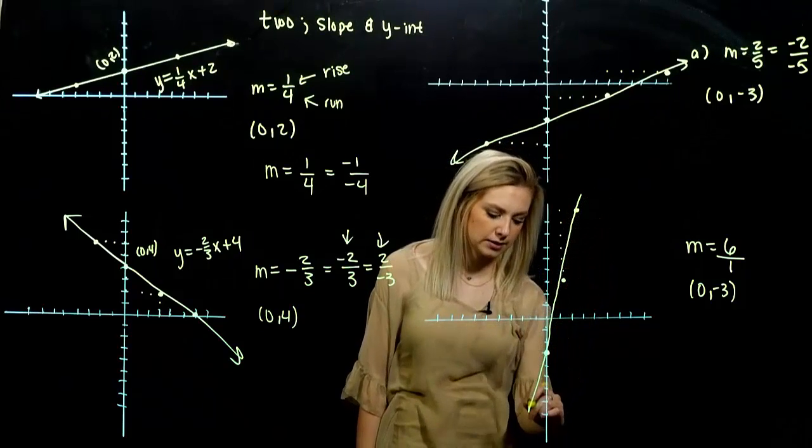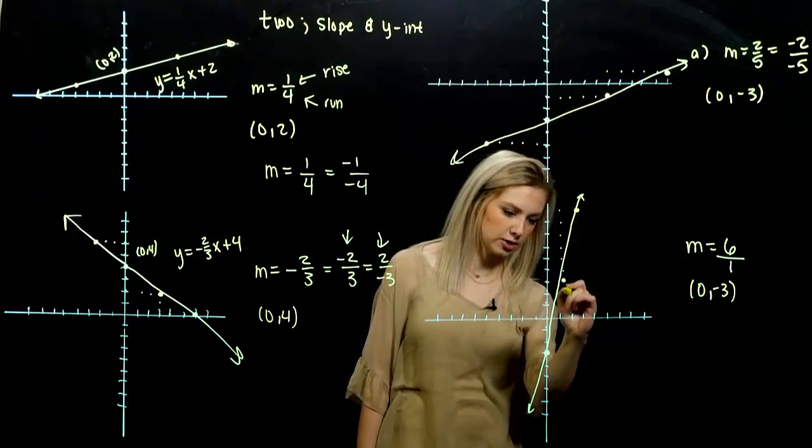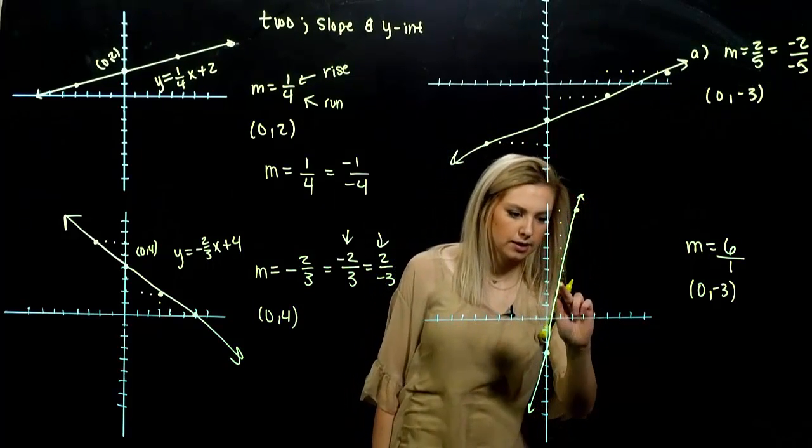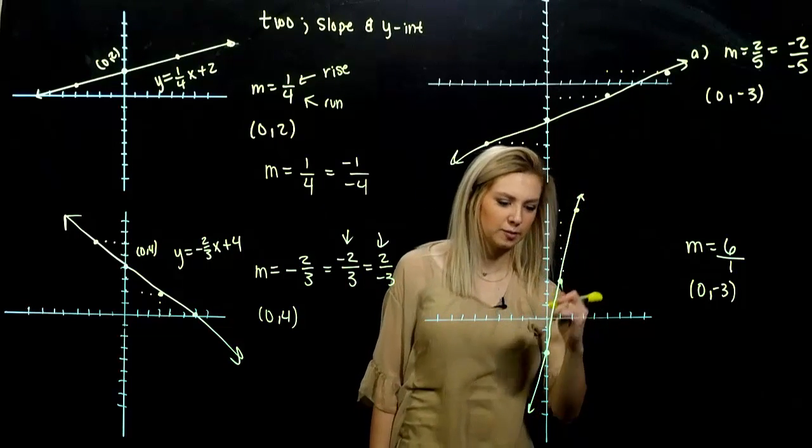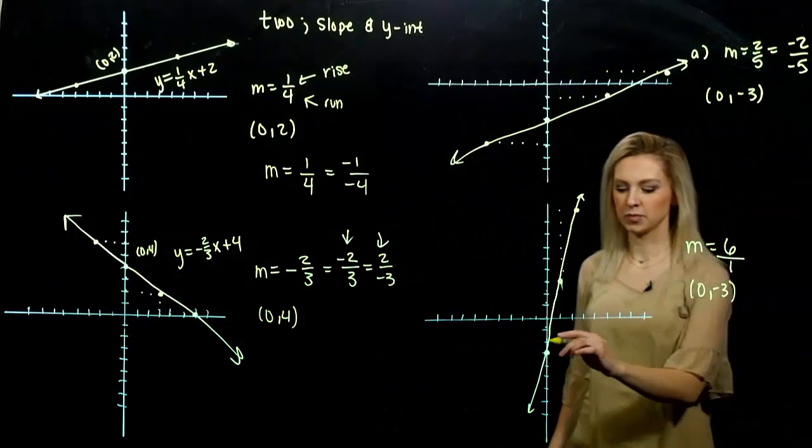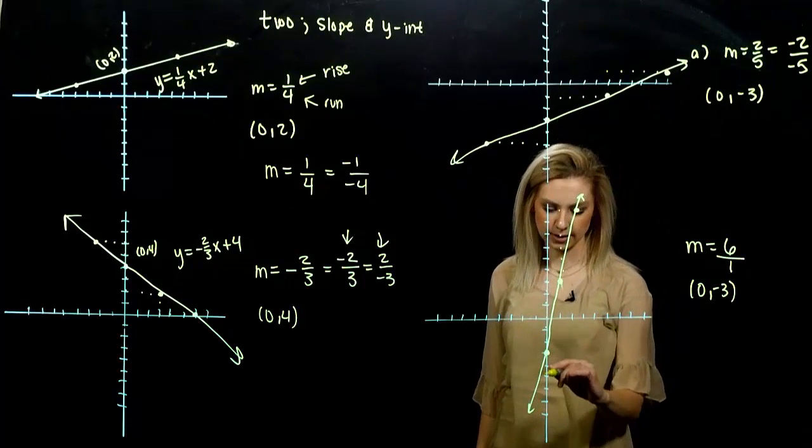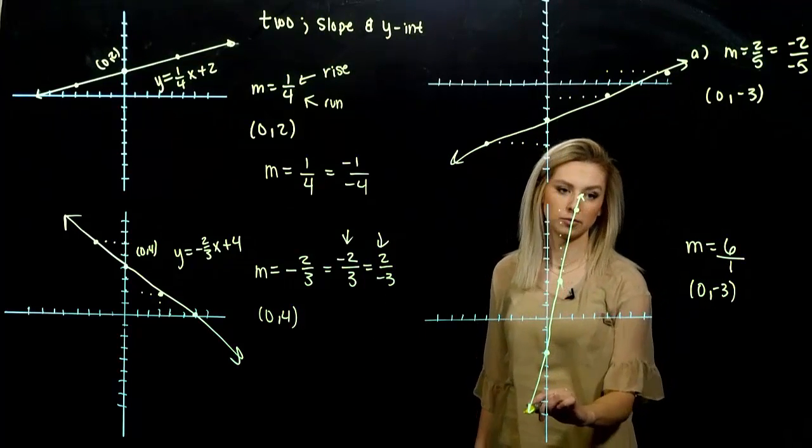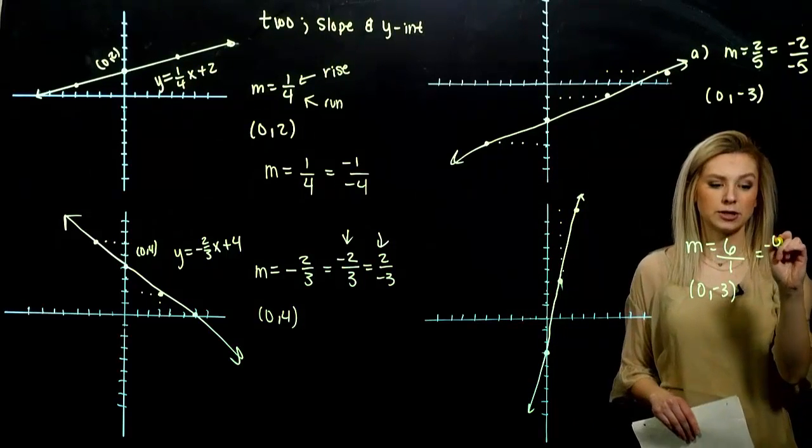That's a lot more significant. My picture was not very accurate, but that's okay. Or from this point, we could have done what? Fall six, run backwards one. We also fall on that line. So we have that option.